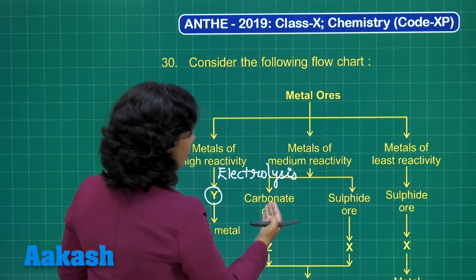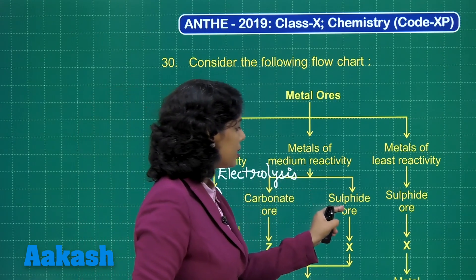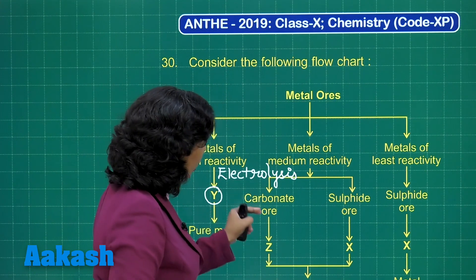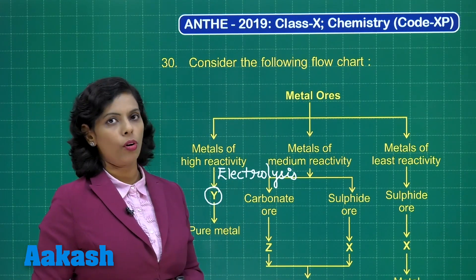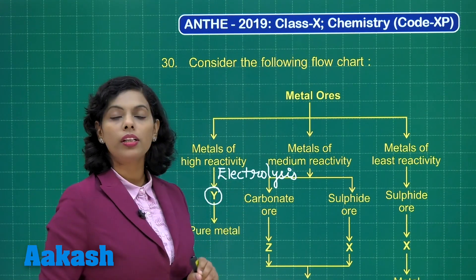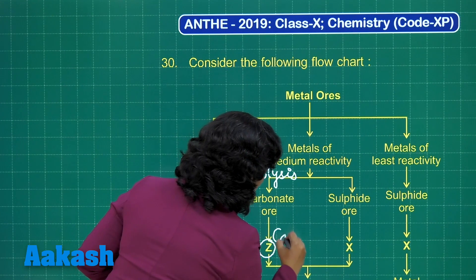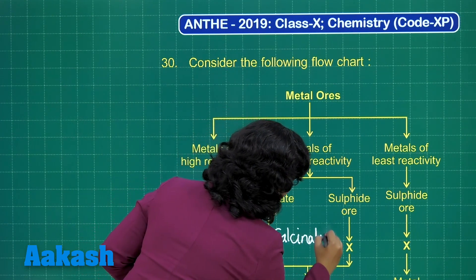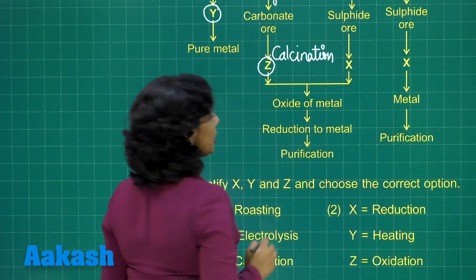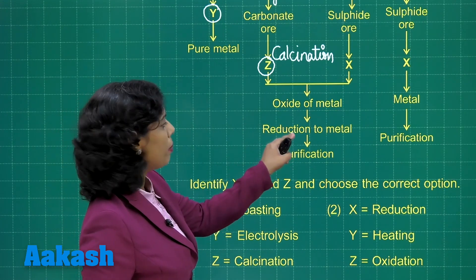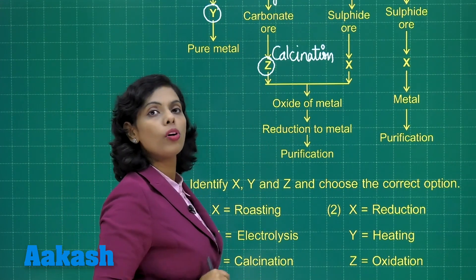For metals of medium reactivity, there are two types: carbonate ore and sulfide ore. If carbonate ore is present, we heat the metal in absence or limited supply of oxygen — the method used here is called calcination. So Z is the calcination process. This results in the formation of the oxide of the metal, and after reduction you obtain the purified metal.